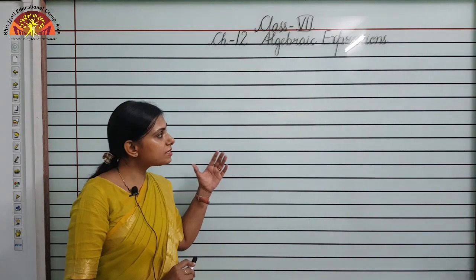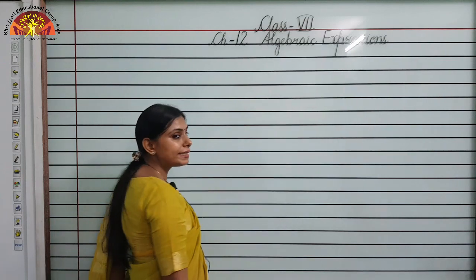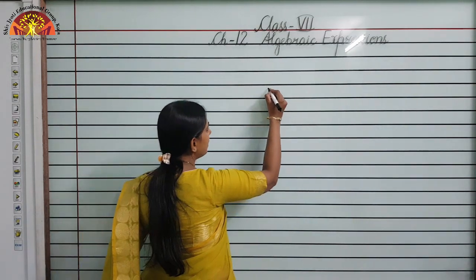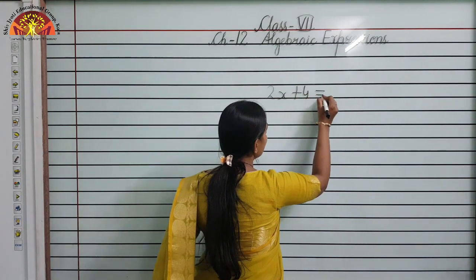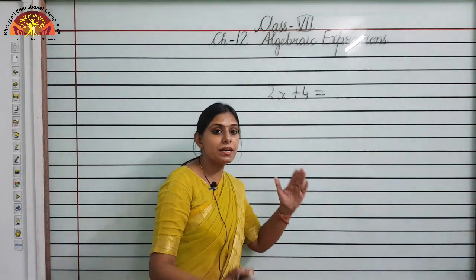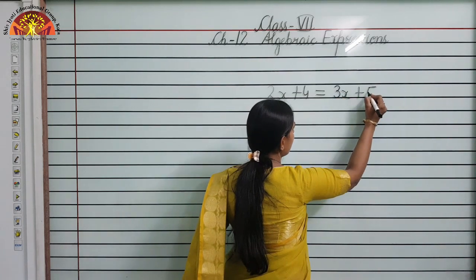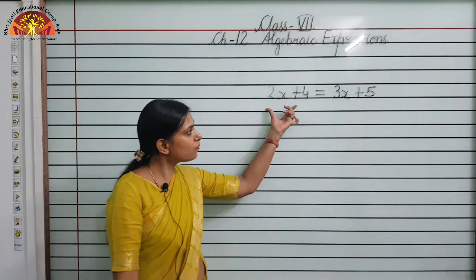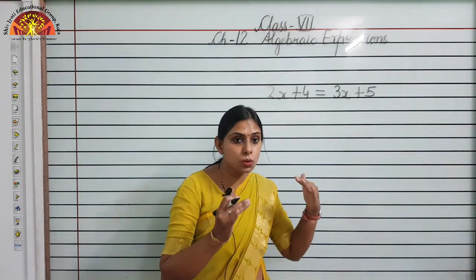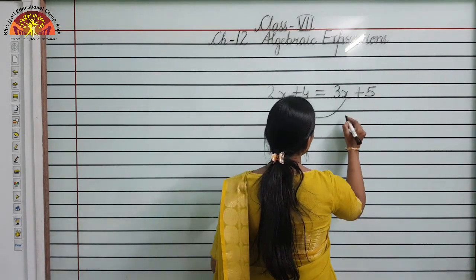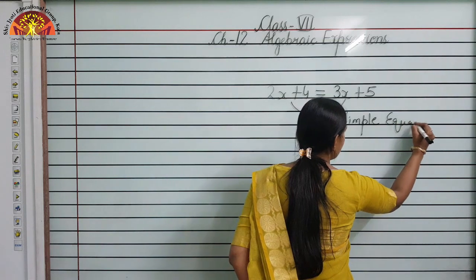In the previous chapter on simple equations, we learned that a simple equation is the sign of equality between two algebraic expressions. For example, 2x plus 4 equals 3x plus 5 — since there is a sign of equality between two algebraic expressions, it is known as a simple equation.